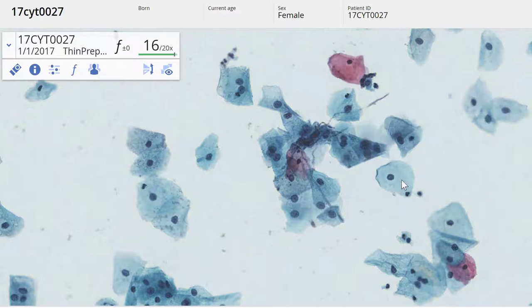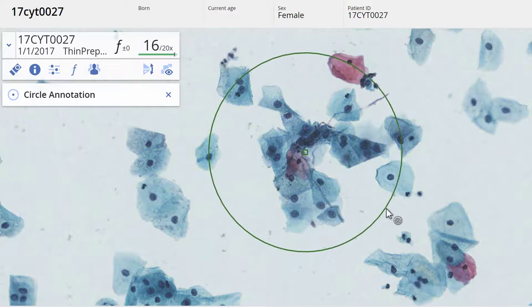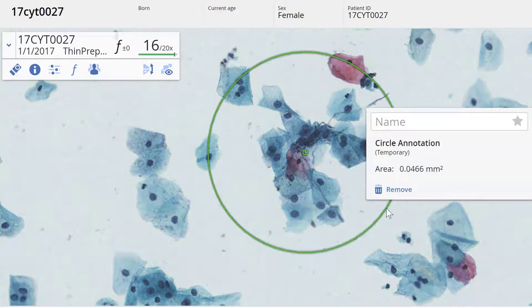A quicker way is to press C on the keyboard to annotate the item of interest.